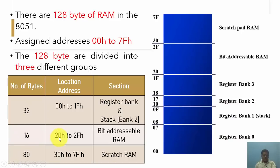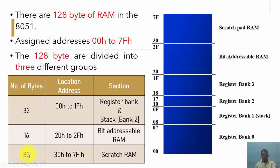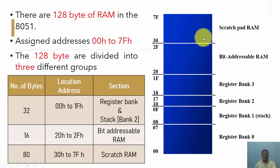After this, the next 16 bytes, which start from 20H and end at 2FH as shown here, are termed as bit addressable RAM. The remaining 80 bytes, which start from 30H and end at 7FH, are mainly termed as scratch pad RAM, which is used to store data for temporary purposes. The location from 30H to 7FH is called scratch pad RAM.